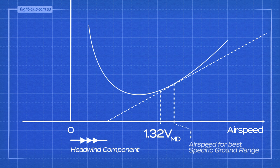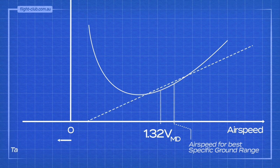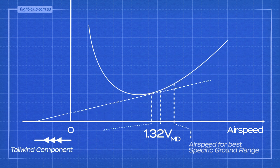On the other hand, a tailwind requires a lower airspeed than in nil wind. A lower airspeed allows more time in the air to maximise the favourable effects of the tailwind.